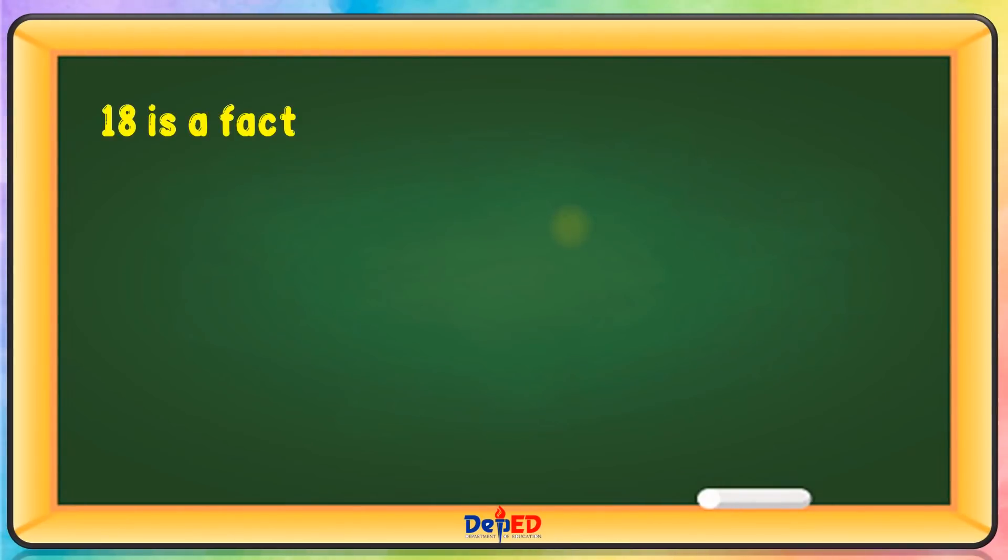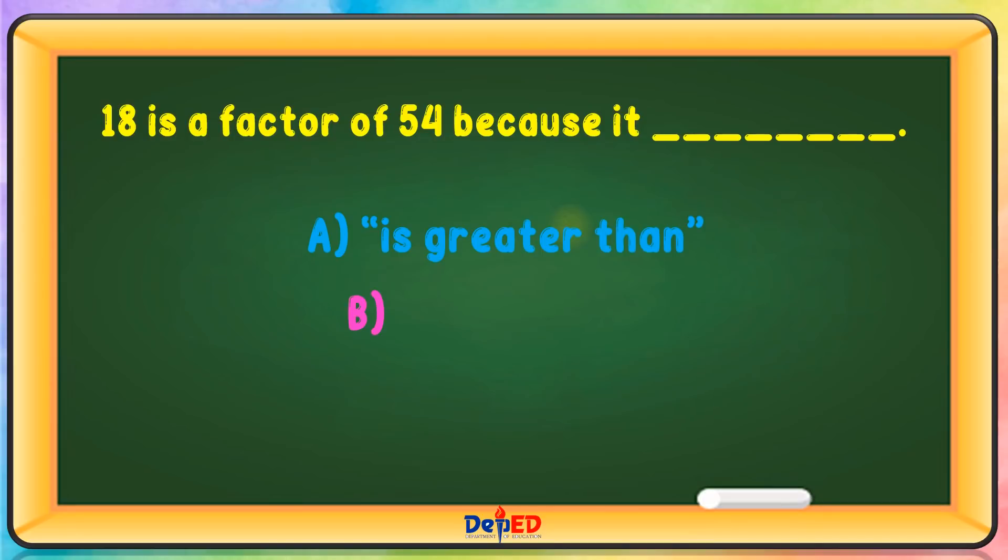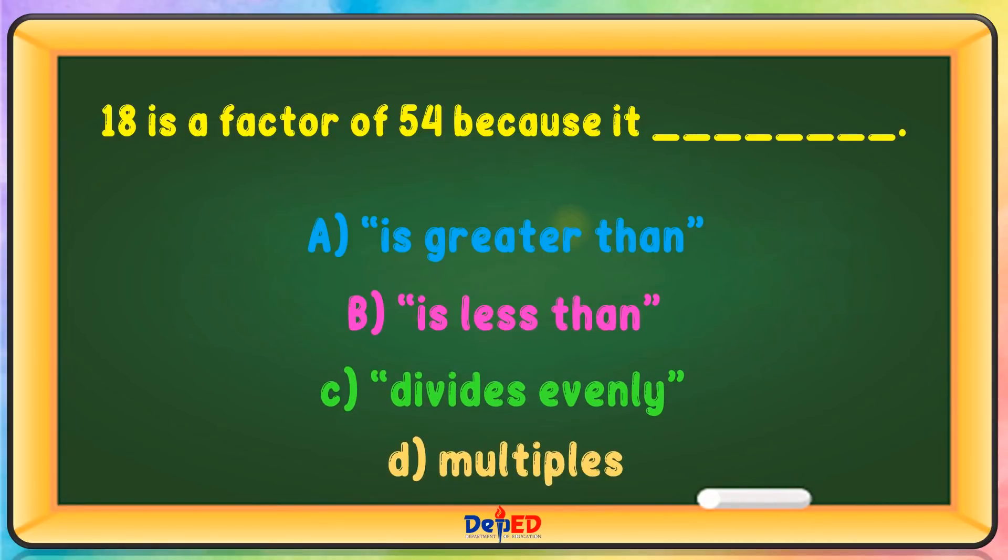18 is a factor of 54 because 18 blank. A. Is greater than. B. Is less than. C. Divides evenly. D. Multiples. The correct answer is C.